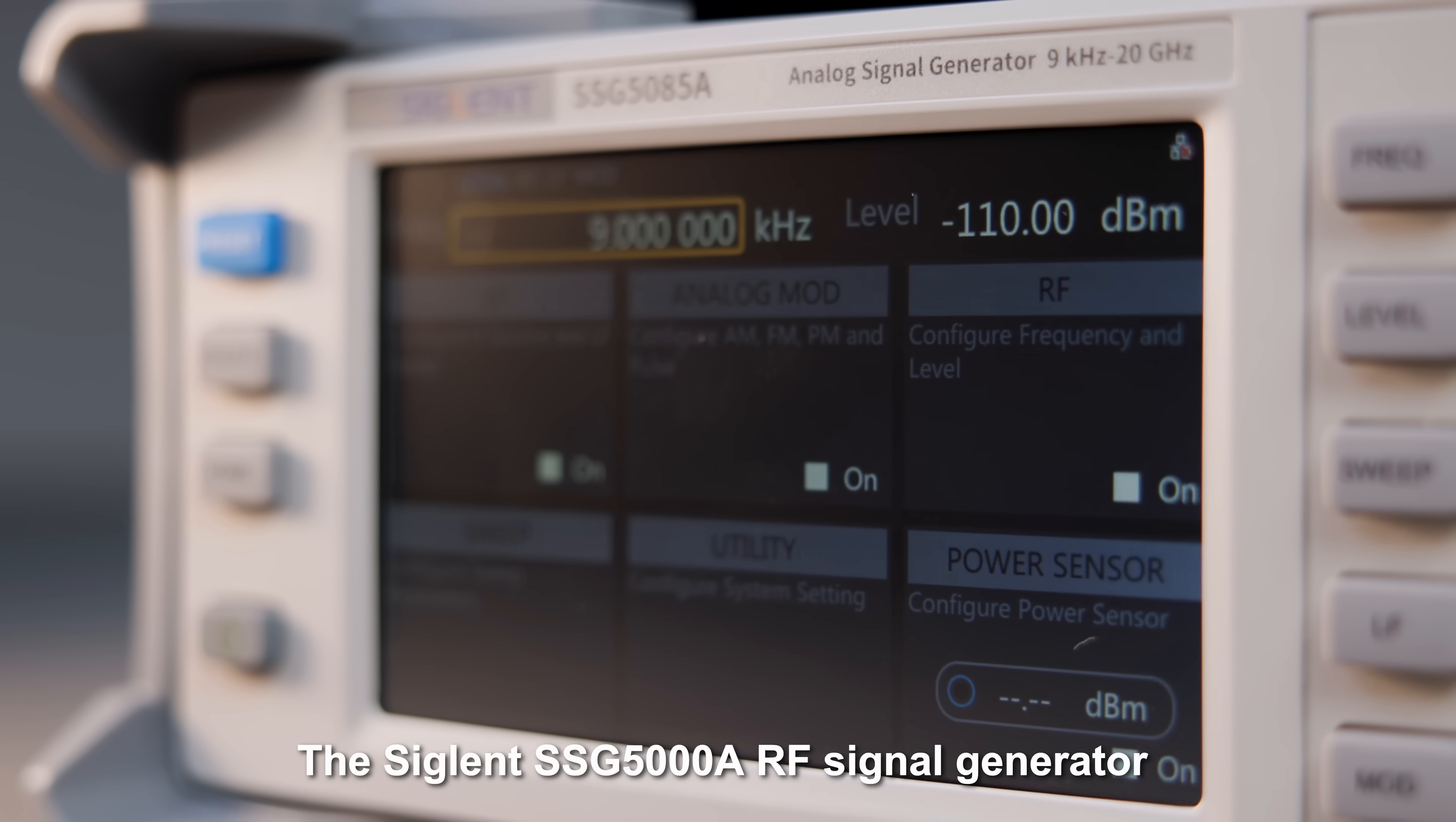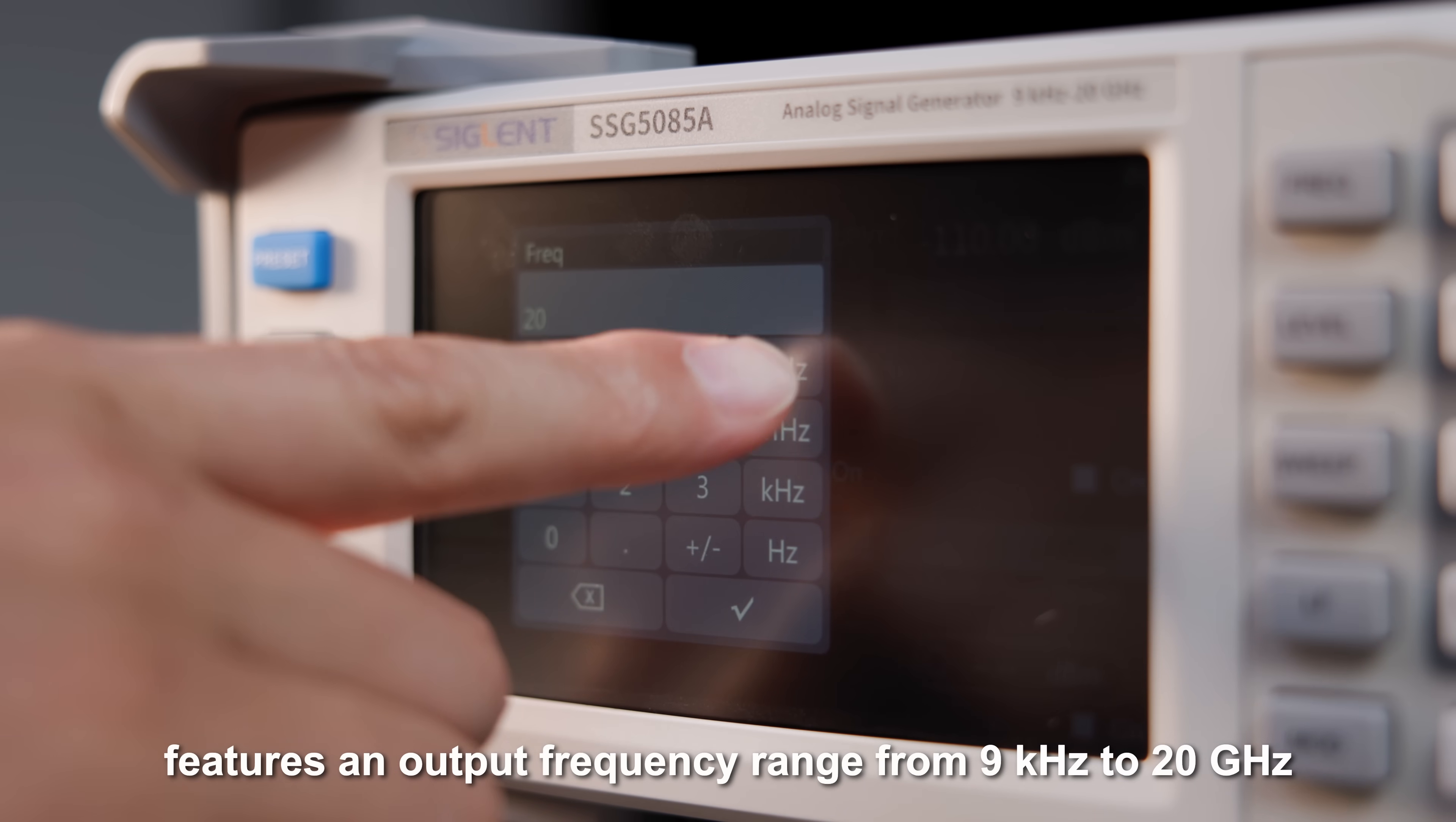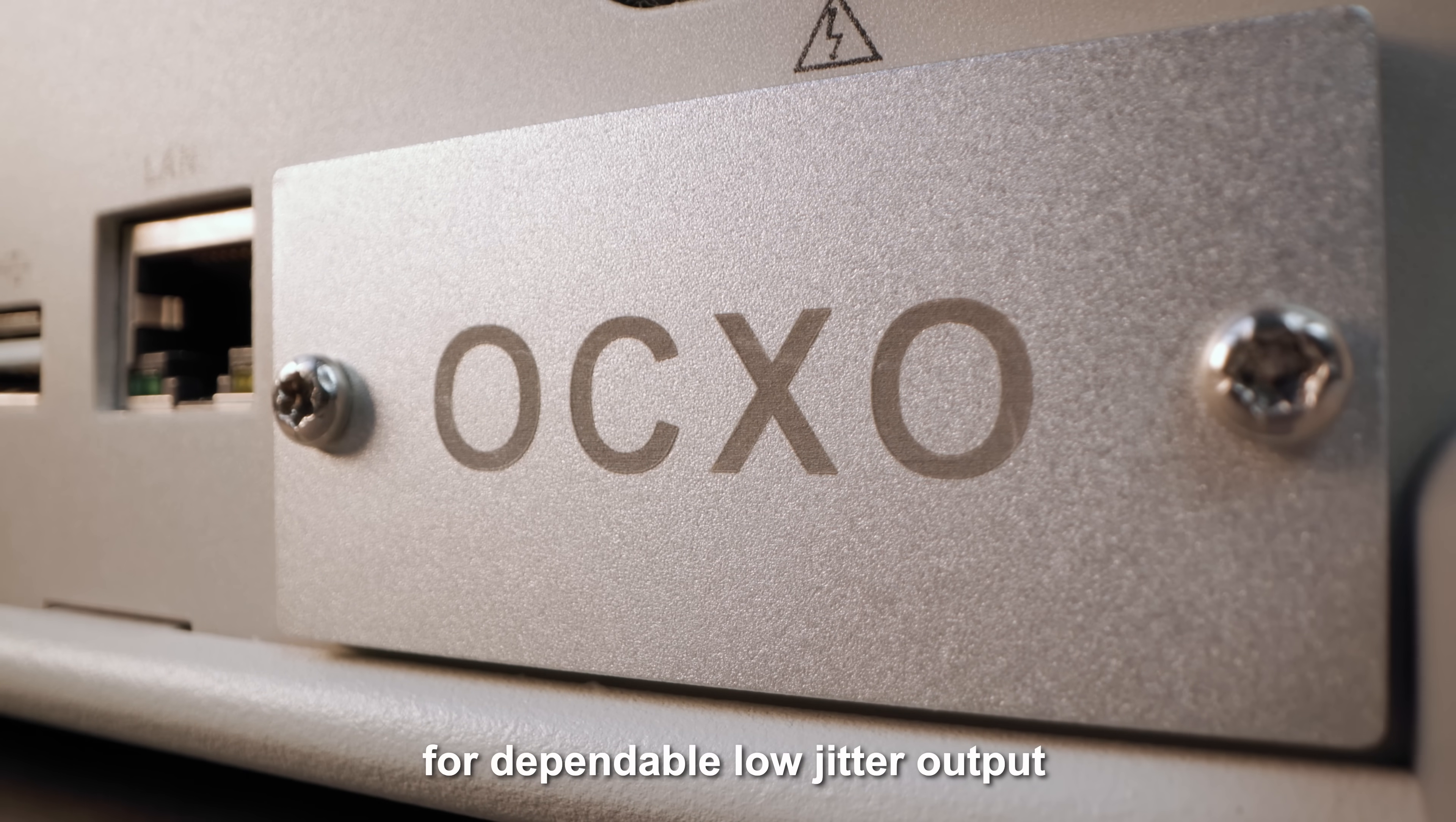The Siglent SSG5000A RF signal generators feature output frequency ranges from 9 kHz to 20 GHz. They include a high-stability OCXO reference source for dependable, low-jitter output.